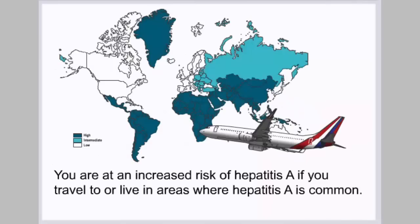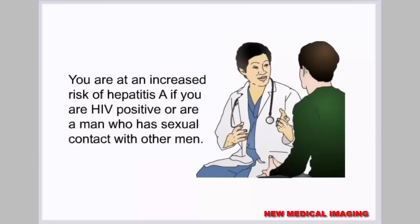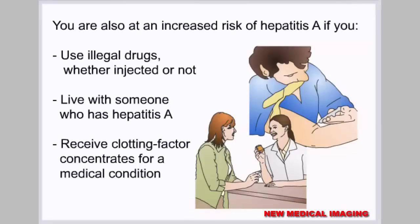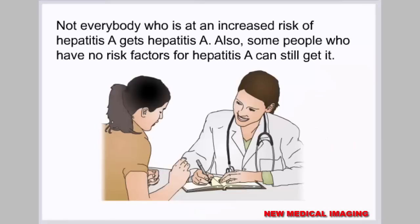You are at increased risk of hepatitis A if you travel to or live in areas where hepatitis A is common, are HIV positive, or are a man who has sexual contact with other men. You are also at increased risk if you use illegal drugs (injected or not), live with someone who has hepatitis A, or receive clotting factor concentrates. Not everybody at increased risk gets hepatitis A, and some people with no risk factors can still get it.